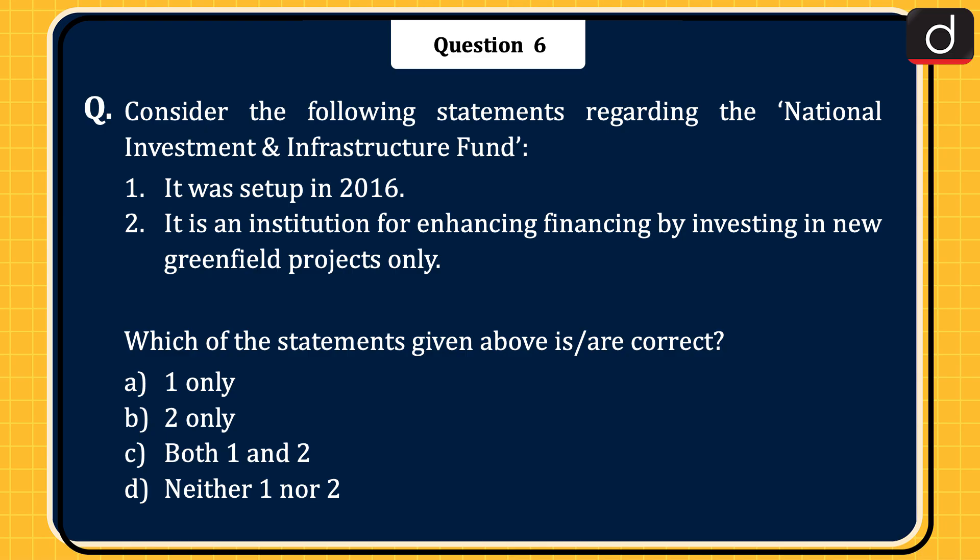The next question: consider the following statements regarding the National Investment and Infrastructure Fund. Statement 1: It was set up in 2016. Statement 2: It is an institution for enhancing financing by investing in new greenfield projects only. Which of the statements given above is or are correct? 1 only, 2 only, both 1 and 2, or neither 1 nor 2? The correct answer is option D, neither 1 nor 2 — that is, both statements are incorrect.